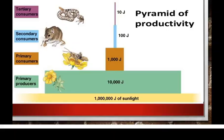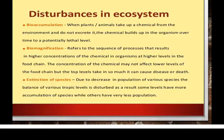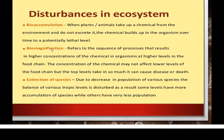We will now see how energy is spent in usable and unusable forms, and what happens to the unusable energy in terms of disturbances caused in the ecosystem. There are different kinds of disturbances. For your syllabus, only biomagnification is required; the rest are just for your knowledge. Bioaccumulation occurs when plants or animals take up a chemical from the environment and do not excrete it — the chemical builds up in the organism over time to a potentially lethal level.